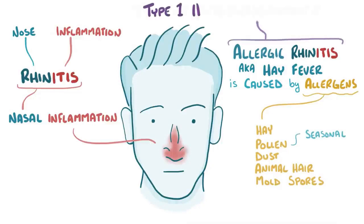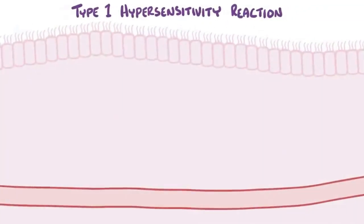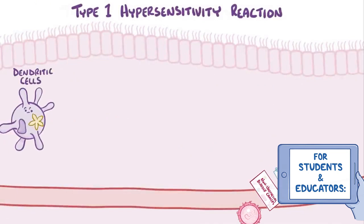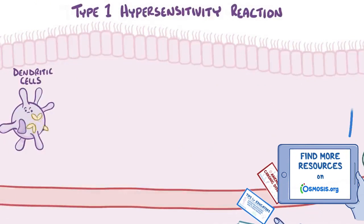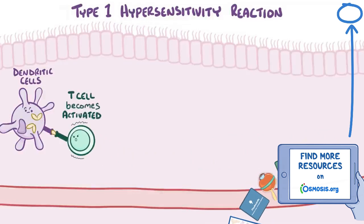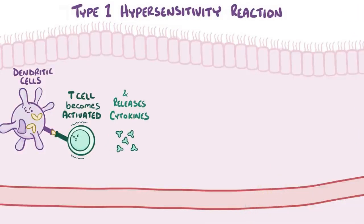Allergic rhinitis is a type 1 hypersensitivity reaction, which is a type of allergic reaction that starts with exposure to an environmental allergen. So let's say that a bit of pollen enters the nose. It can get picked up by a dendritic cell, which is a type of immune cell that gobbles up the foreign particle and presents it to a nearby lymphocyte called a T cell. If that T cell gets activated, it kicks into action, producing cytokines which help to get other immune cells involved.